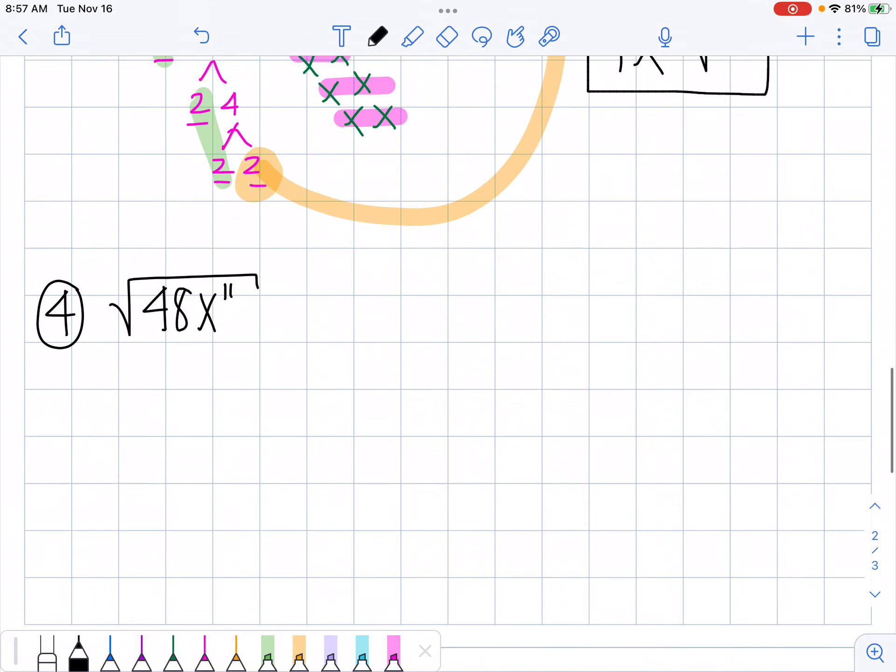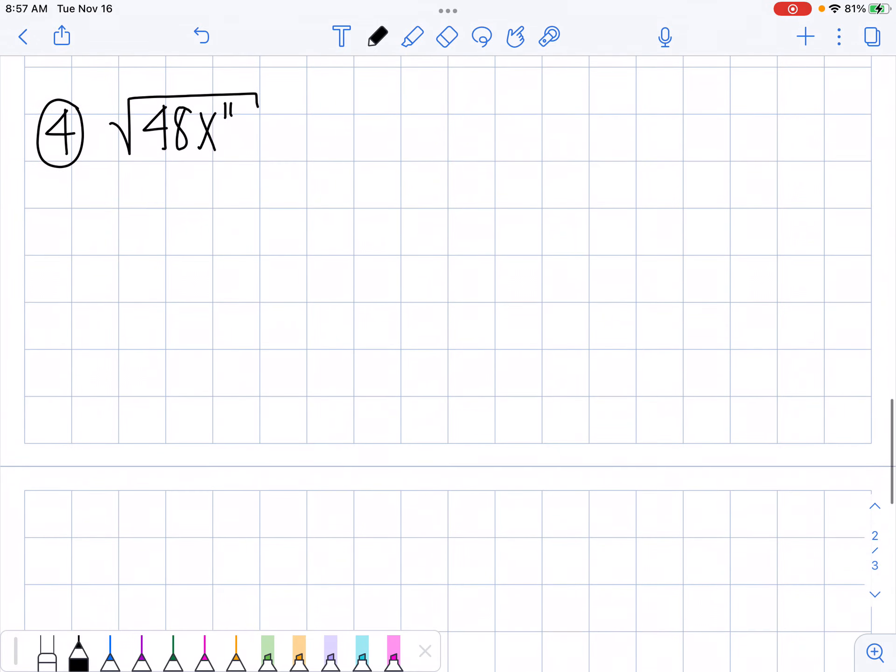Last one: the square root of 48X to the 11th. Let's break it down. What multiplies to 48? How about 6 times 8? What multiplies to 6? 2 times 3. What multiplies to 8? How about 2 times 4? And what multiplies to 4? 2 times 2.